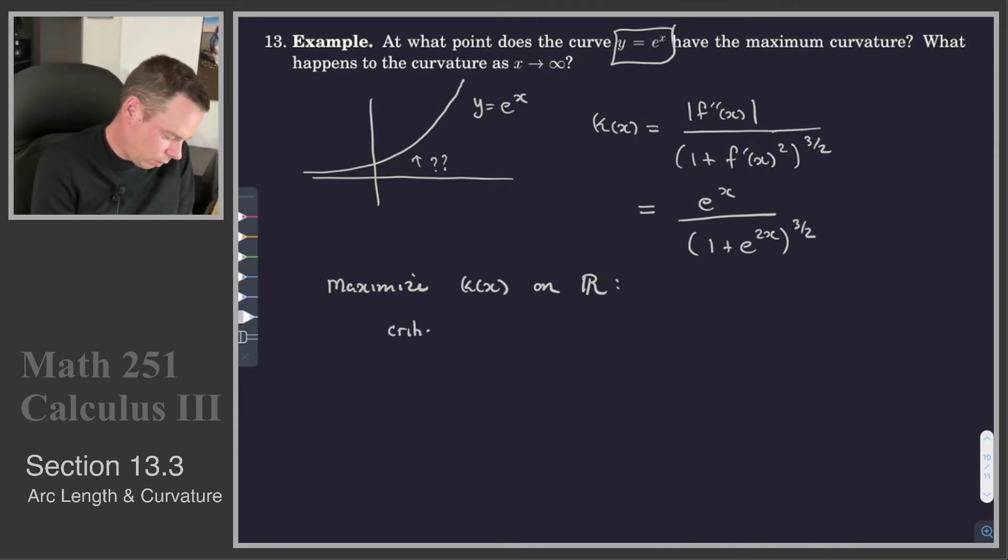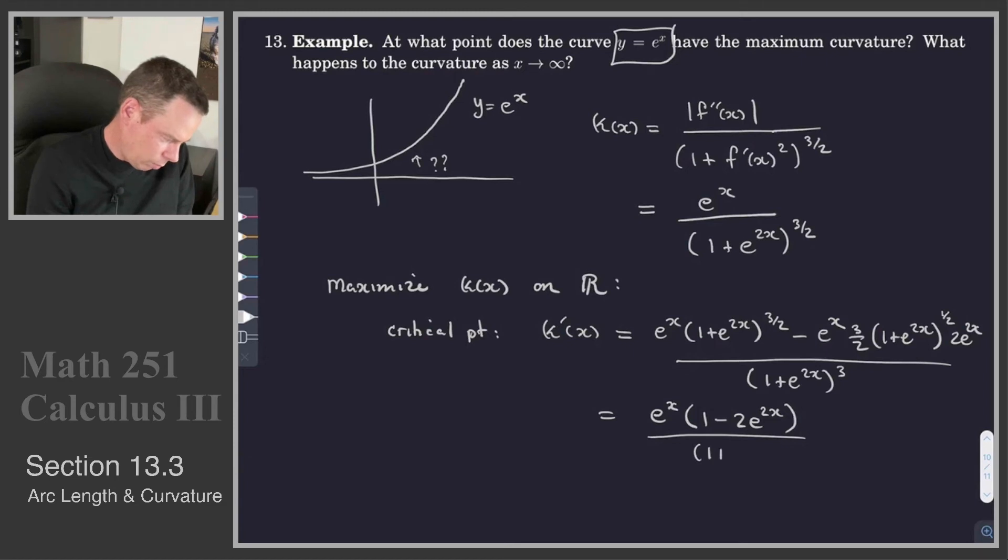How do we solve these things? We first find the critical points. So what's the critical points? That's where the derivative would be zero. So I'm going to need to know the derivative of this function. So it's the derivative of the top times the bottom minus the top times the derivative of the bottom. So 1 half and then a 2 e to the 2x all over the bottom squared. 1 plus e to the 2x cubed. A little bit of cleanup on that. We'll just write down the cleaned up version. So a little bit of algebra just to clean it up a little bit. We get an e to the 1 minus 2 e to the 2x on top and a 1 plus e to the 2x to the 5 halves on the bottom.